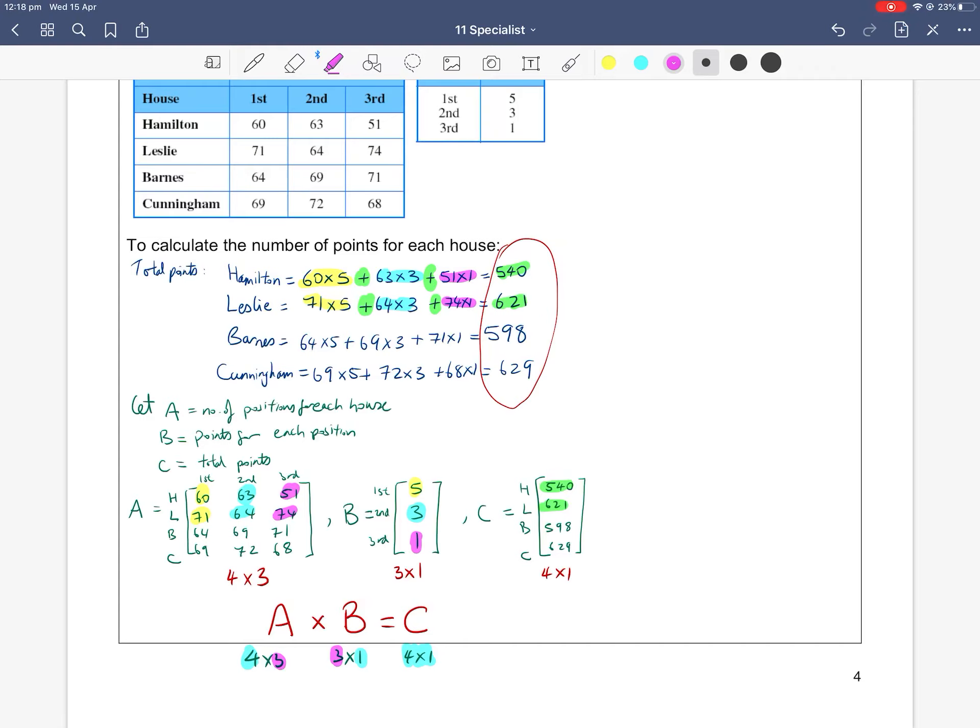It might be a little bit confusing right now, but one thing to remember: when you multiply matrices, always go row by column. So always go row by column. And what I mean is your row, 60 times five—so that's the column down—by 63 times three, by 51 times one. And you add them all together. So row by column.